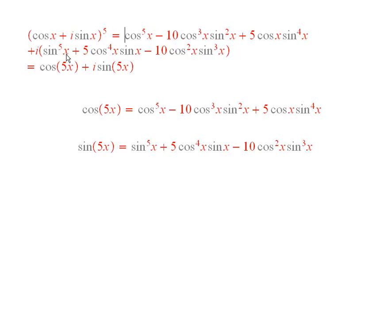Now, by De Moivre's Theorem, that's cosine of 5x plus i sine of 5x, so the cosine of 5x equals this, sine of 5x equals this.